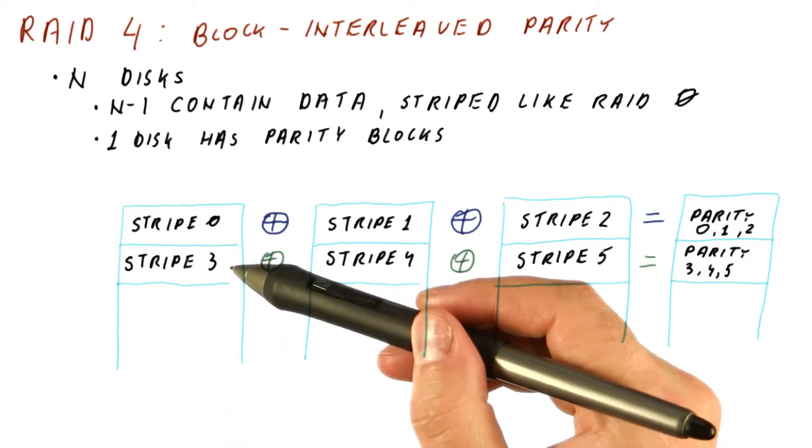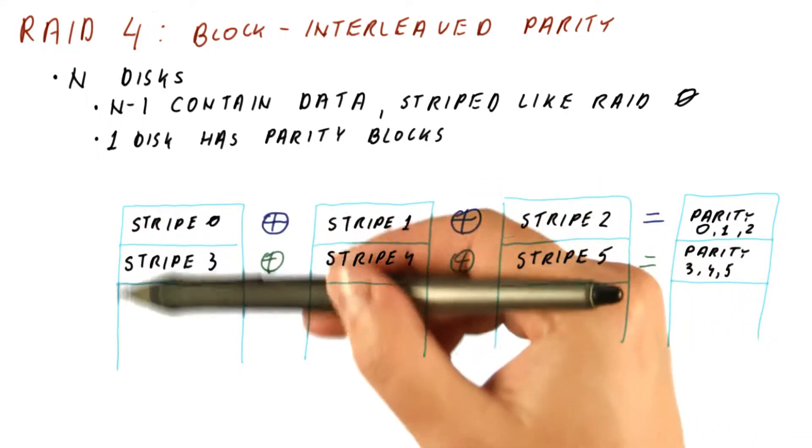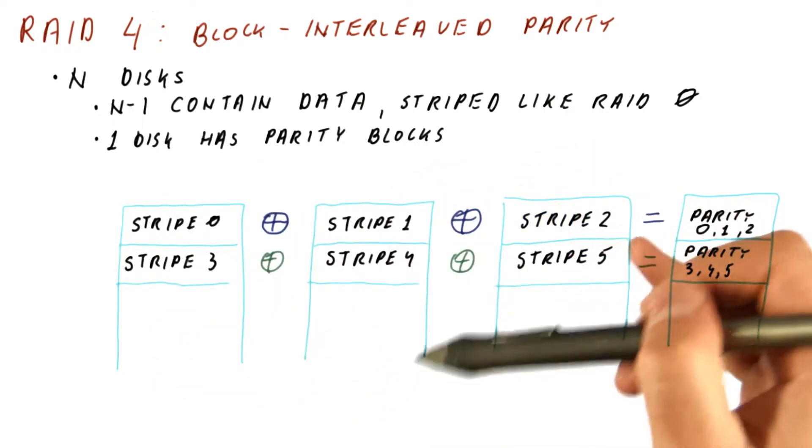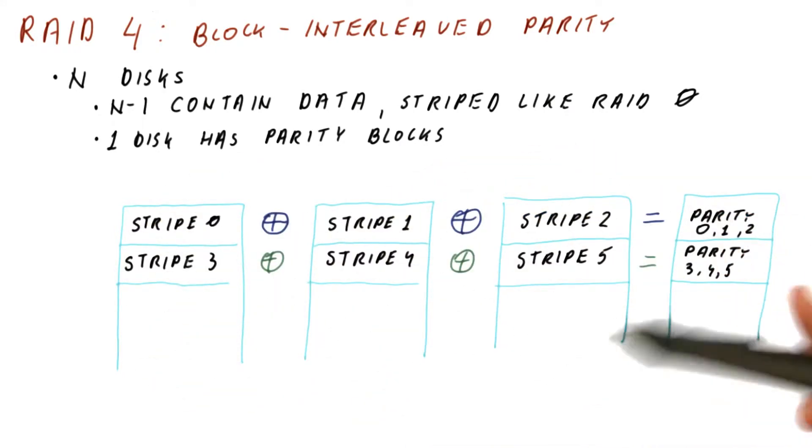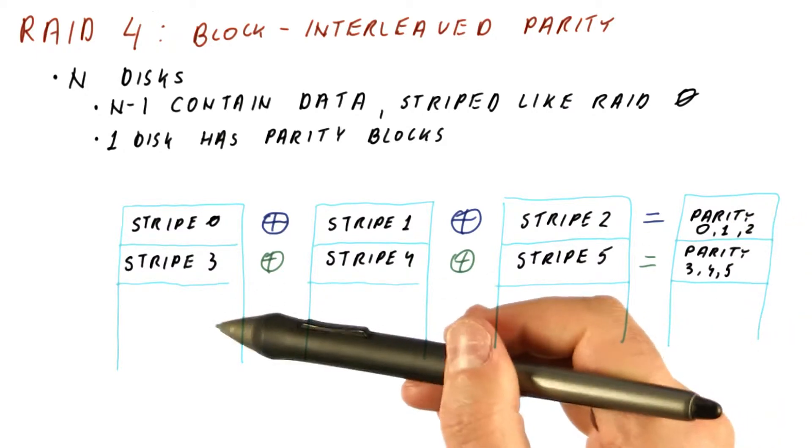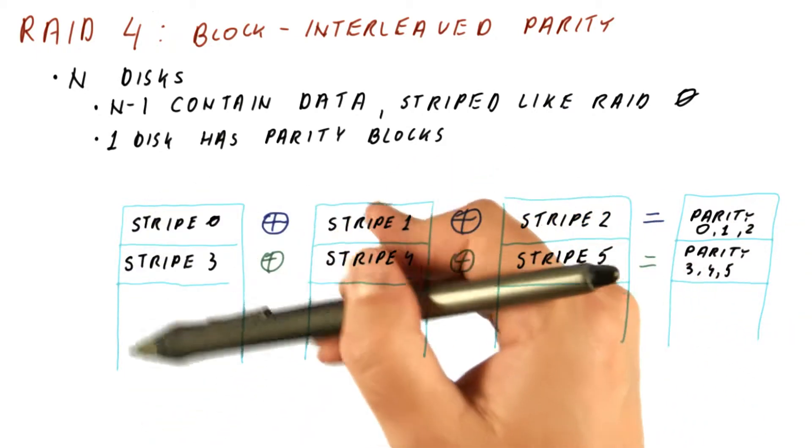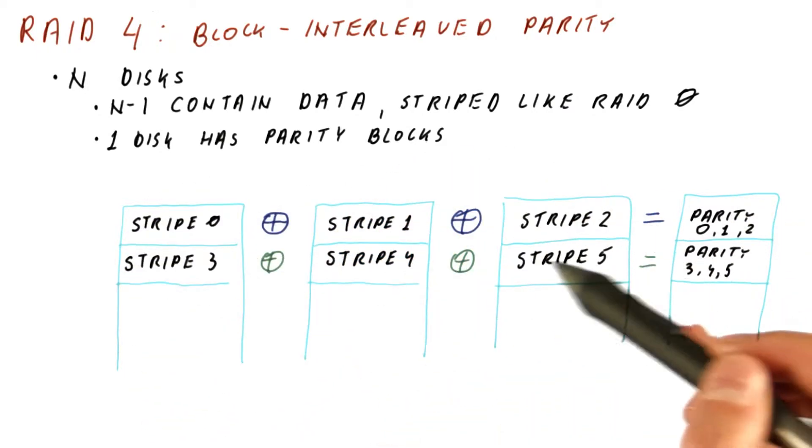So the idea here is that if let's say one disk fails, we have the data of the two disks here, and we have the parity. We can reconstruct what was on the first disk by XORing these three.